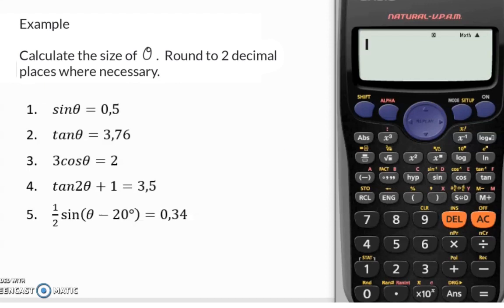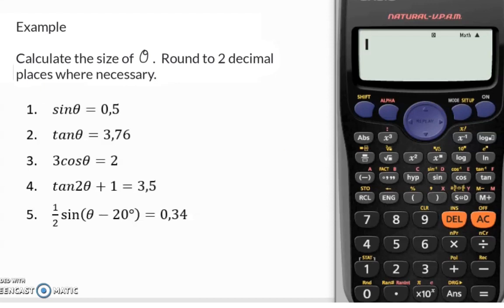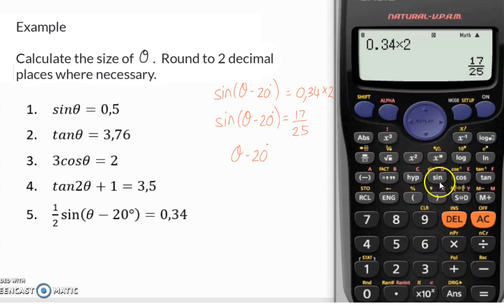In example 5, we once again first need to get the trig function, sin, and the angle, θ minus 20, alone on one side. This means that to get rid of the multiply by a half on the left, we will have to divide by a half on each side. Or you can of course take the 0.34 and also multiply by 2, which is the same calculation as dividing by a half. So in reality, the sin ratio is 17 over 25. Now we can ask the calculator to determine the angle of θ minus 20 by saying shift of sin of that ratio, the answer that we just calculated, and that will give us an angle of 42.84. To finally solve θ, we need to get rid of the minus 20 by adding 20 on both sides, so θ in the end will be 62.84.